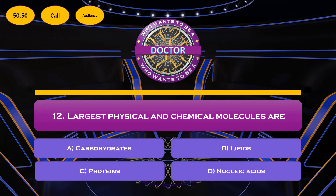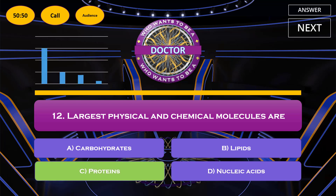Question number 12: the largest physical and chemical molecules are — option A: carbohydrates; option B: lipids; option C: proteins; option D: nucleic acids. The correct answer is option C, proteins.